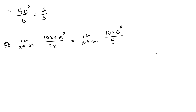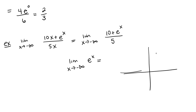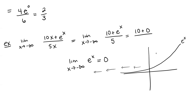So the limit as x goes to negative infinity of e to the x — when we think about what e to the x looks like, going off further and further towards negative infinity, we see that e to the x goes to 0. So this limit is equal to 10 plus 0 divided by 5, or in other words, this limit goes to 2.